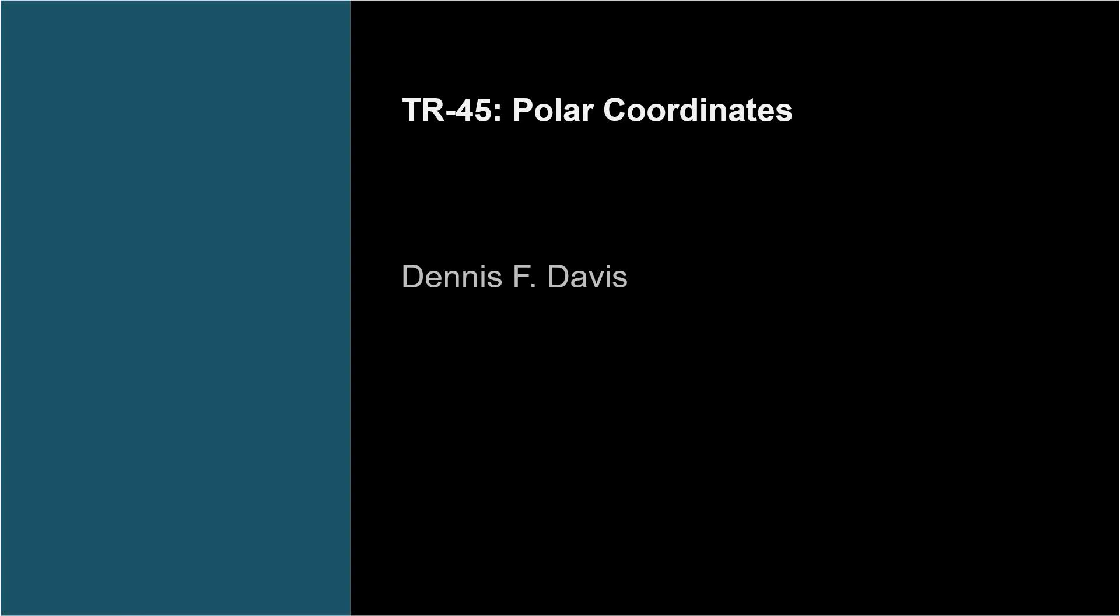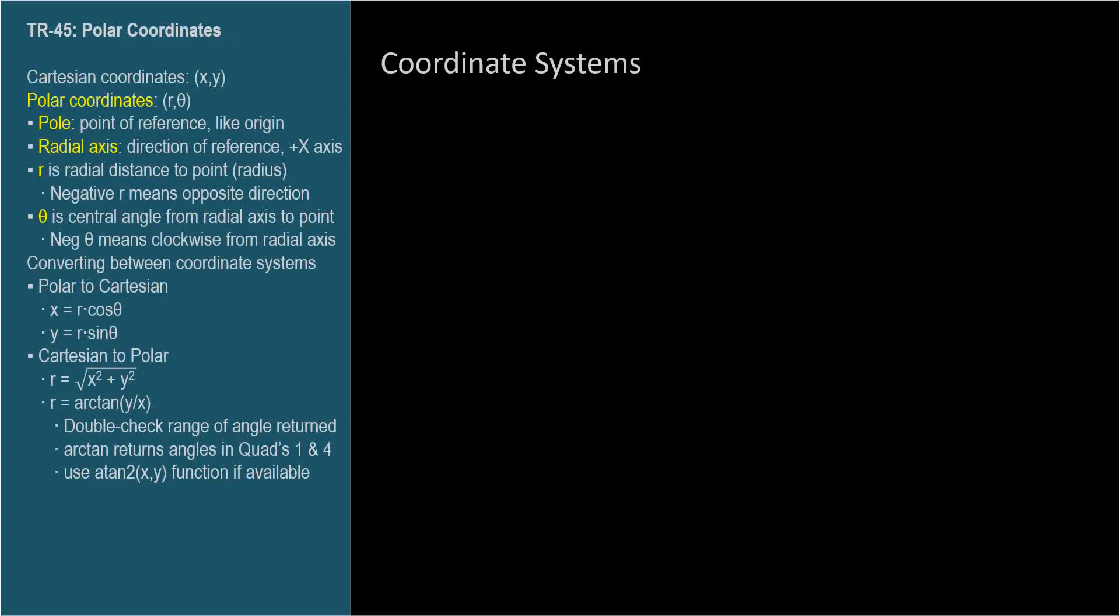In a two-dimensional plane, two coordinates are required to uniquely identify a point. The coordinate system we're probably most familiar with is the rectilinear or Cartesian coordinate system. The two coordinates are the x and y coordinates, the distances along the x and y axes whose intersection denotes the point.